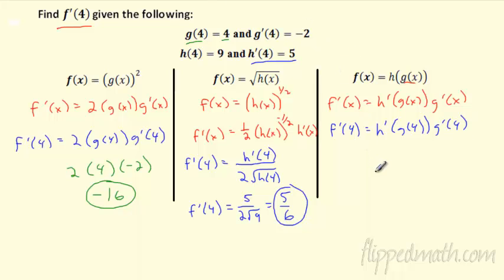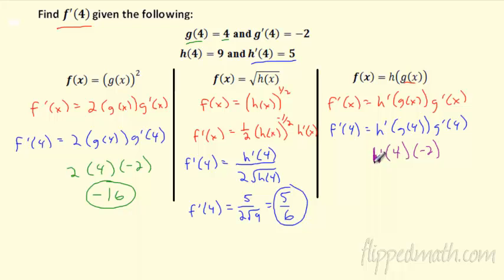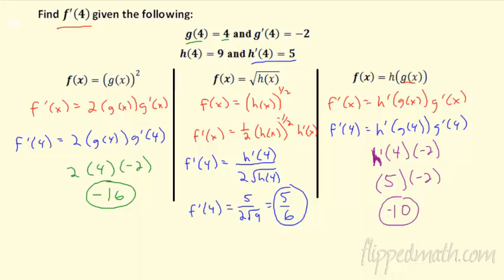Substituting: g(4) = 4, so I'm taking h'(4). And g'(4) = -2. Luckily h'(4) = 5. So this is 5 times -2 = -10. That is the chain rule — and again, it is off the chain.